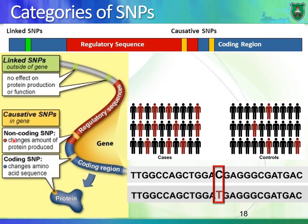Causative SNPs can be located in non-coding regions — we call them non-coding SNPs. They can be located in the promoter region or in a regulatory sequence, meaning a DNA sequence that regulates gene expression and protein production. SNPs can also be in the coding region — they exist in the DNA sequence that influences protein production or the amino acid sequence of a protein, which we call a coding SNP.